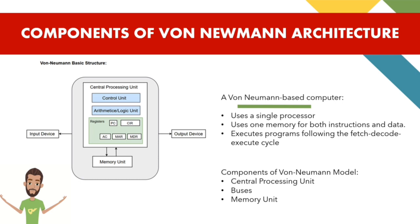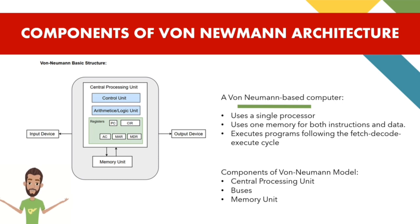The Von Neumann architecture consists of a main memory, a central processing unit (processor or core), and an interconnection between the memory and the CPU. The input and output components connect through this interconnection, with a single shared memory for program and data and a single bus for memory access, arithmetic unit, and a program control unit.